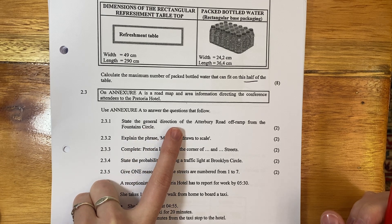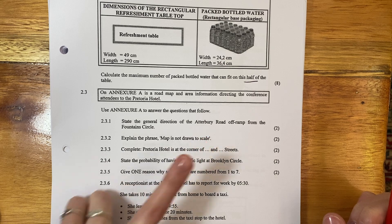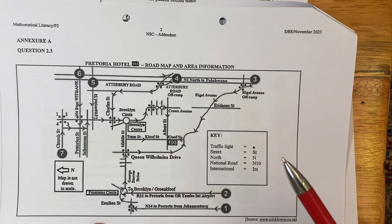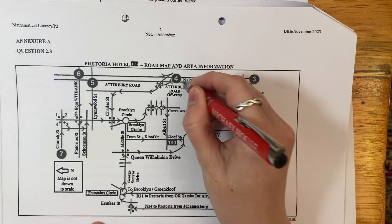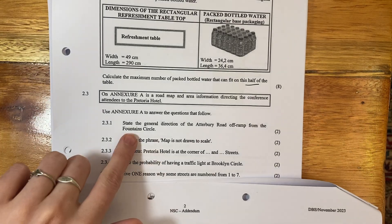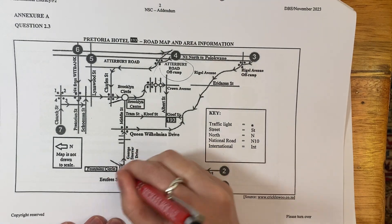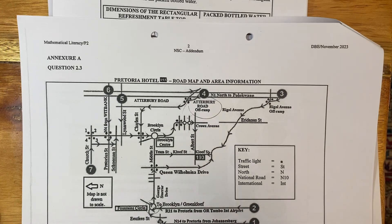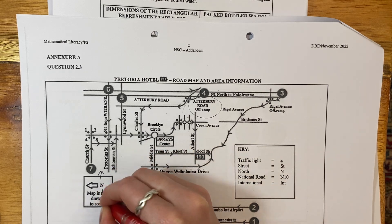State the general direction of Atterbury Road off-ramp from the Fountains Circle. So there's Atterbury Road off-ramp — that's where we're going from. From Fountains Circle. Here's Fountains Circle. Okay, that's north — that's quite important. So: north, east, south, west.